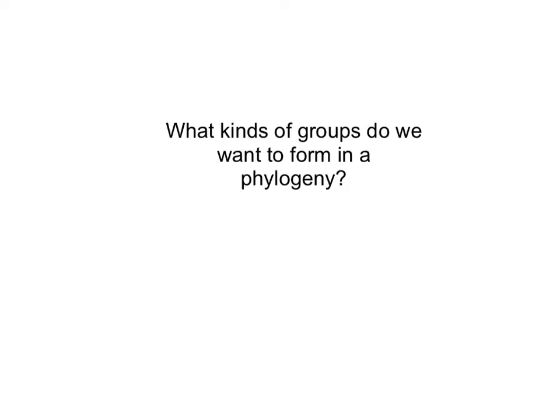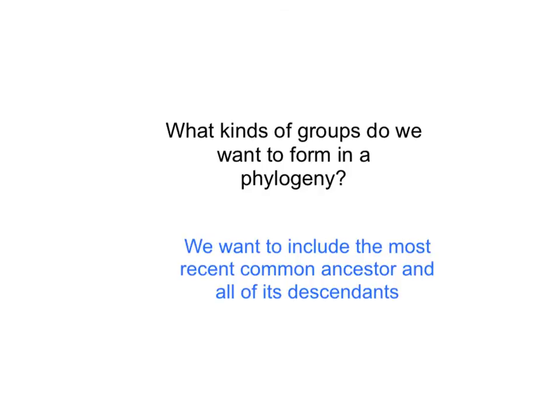The question we have is what type of groups do we form, or do we want to form, when we make a phylogeny? What we want to form is a group that includes the most recent common ancestor of all the members of that group and all of its descendants.